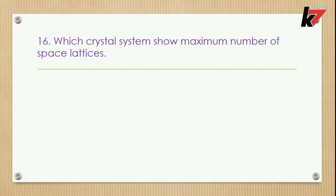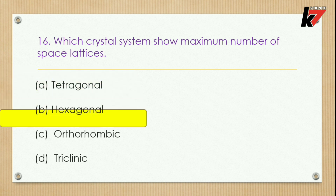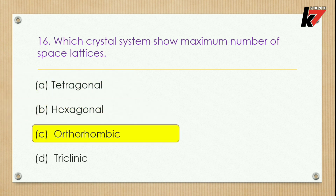Question 16: Which crystal system shows the maximum number of space lattices? Options: tetragonal, hexagonal, orthorhombic, or triclinic. The correct option is orthorhombic because it has 4, the maximum number of space lattices.